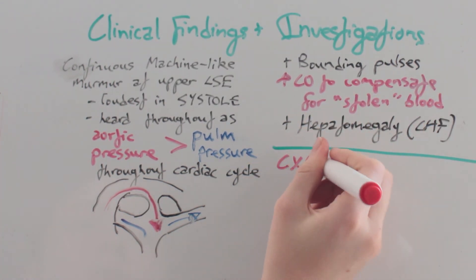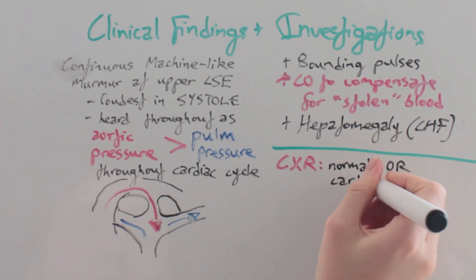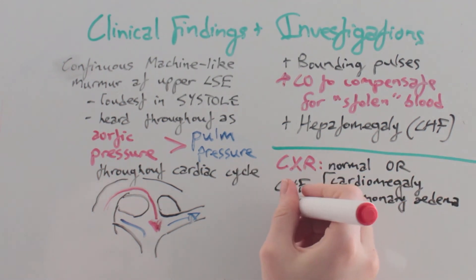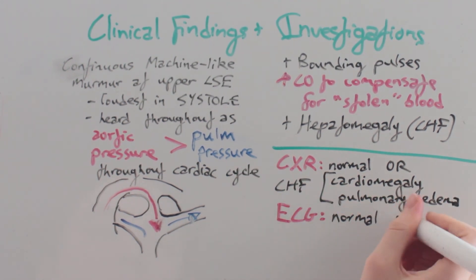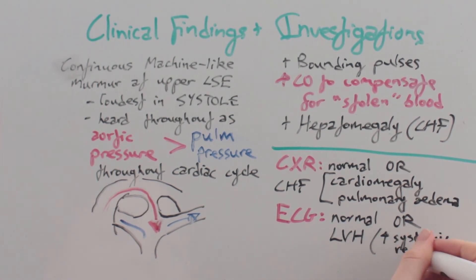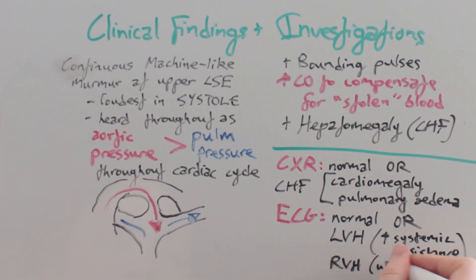Investigations include chest x-ray, which will be normal or show cardiomegaly and pulmonary edema in the situation of congestive heart failure. ECG will be normal or can show left ventricular hypertrophy due to increased systemic resistance, and right ventricular hypertrophy if the left to right shunt causes pulmonary hypertension.